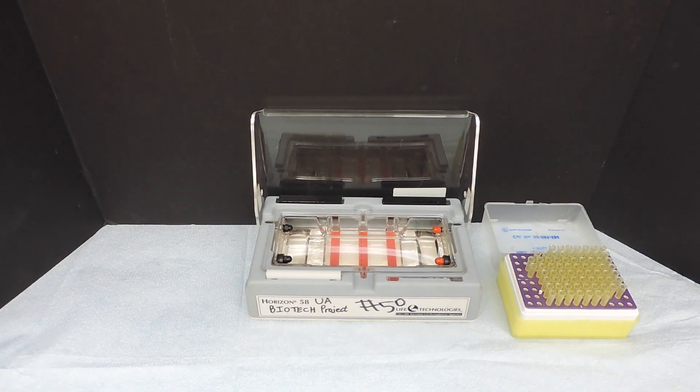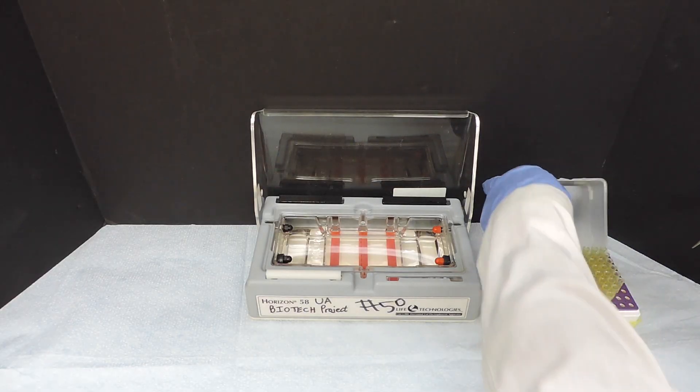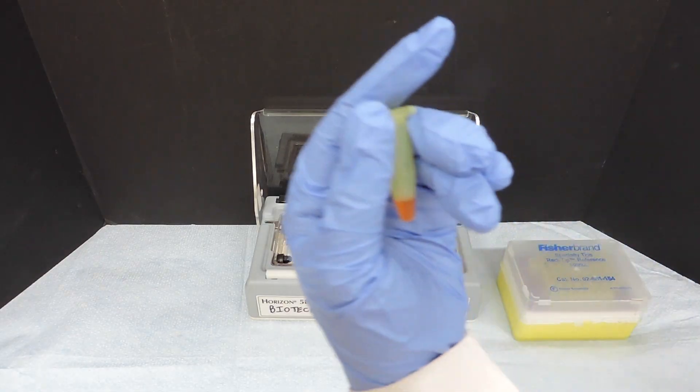Negatively charged molecules migrate towards the positive electrode, red, and positively charged molecules migrate towards the negative electrode, black.